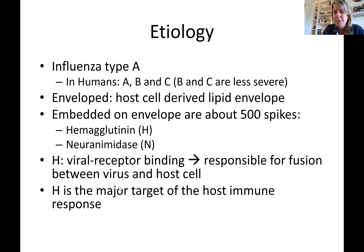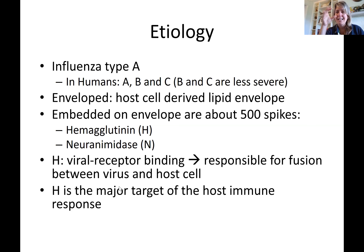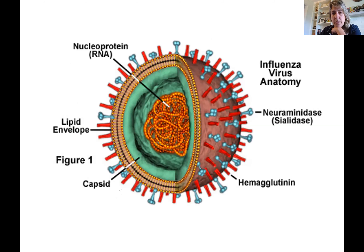Embedded on this envelope there are about 500 protein spikes. These spikes are the hemagglutinin and neuraminidase, which give the virus its nomenclature — the H and N in H1N1 or H3N2 in humans. The hemagglutinin is the viral receptor-binding protein; it is responsible for the virus finding the cell it has affinity for, which in the case of influenza is the respiratory epithelium. The hemagglutinin is also the target for the host immune response.